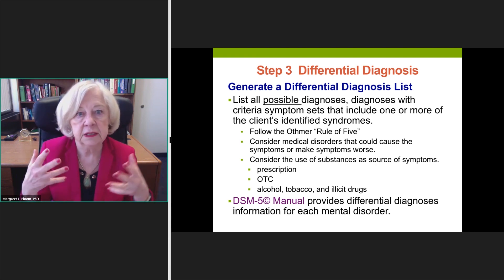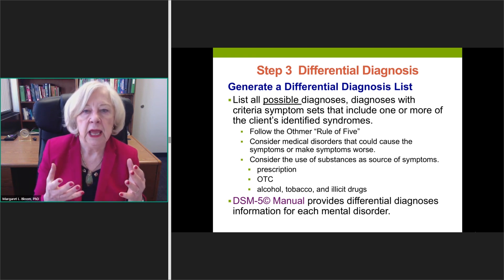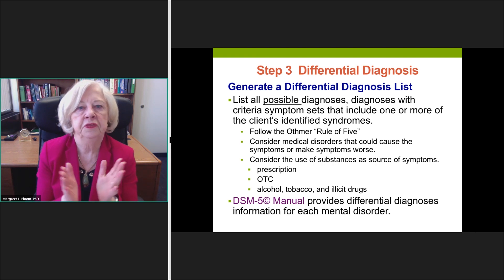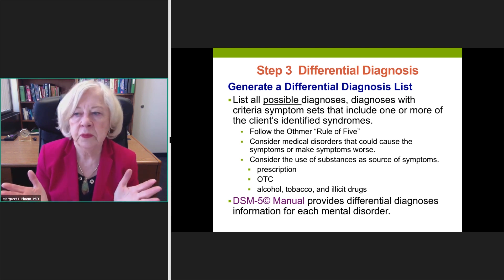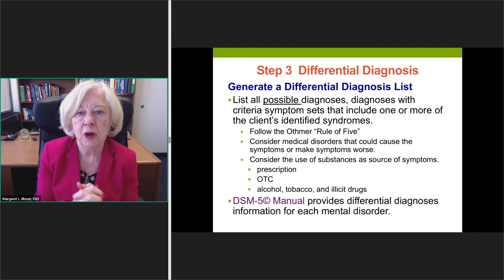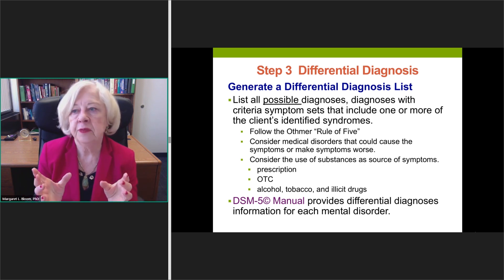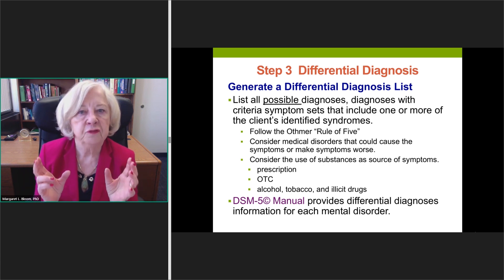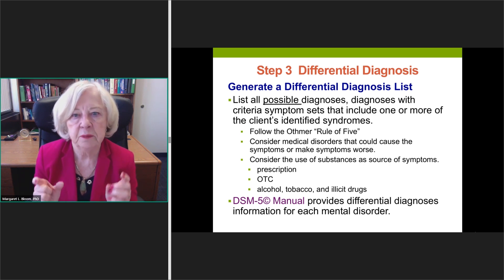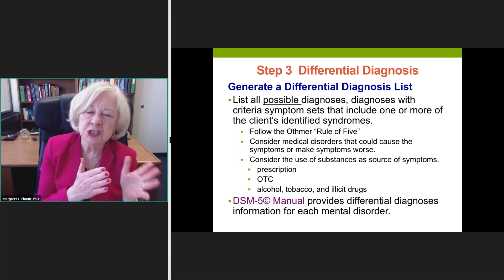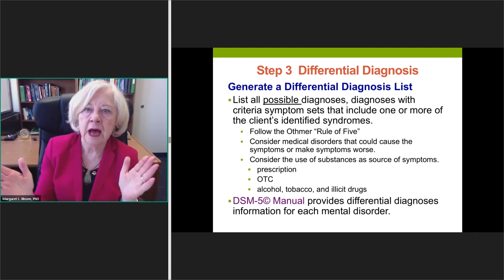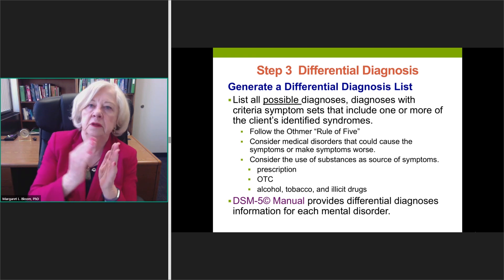We don't just have to think this up — we also have some help. One of the things to make sure we think hard about is following the Othmer rule of five. This comes from a book by Othmer and Othmer, a husband and wife team, that's no longer in print. They say that when you're trying to do a differential, you should always ask yourself: what are five diagnoses this might be? Nothing magic about five, except that you can usually come up with a couple, but to get five, you've got to push your thinking a little more broadly.